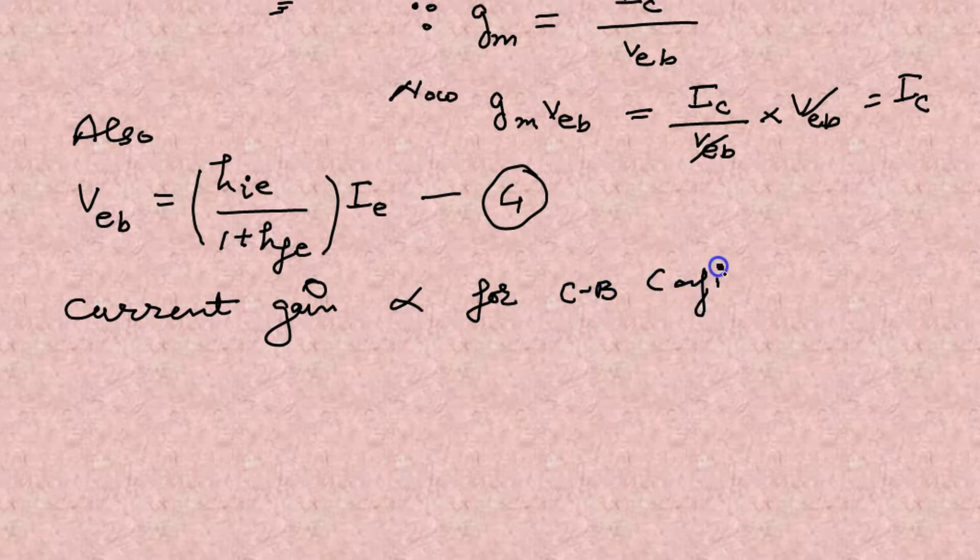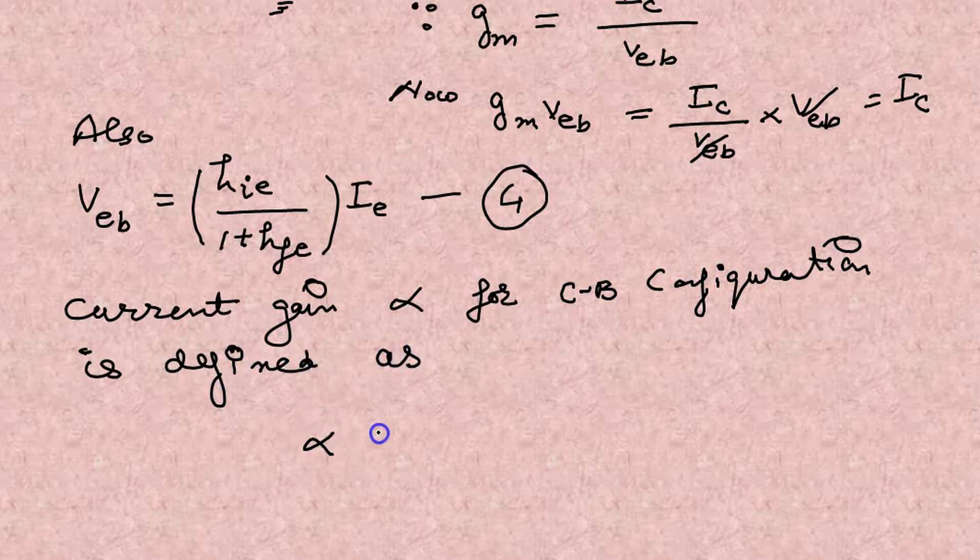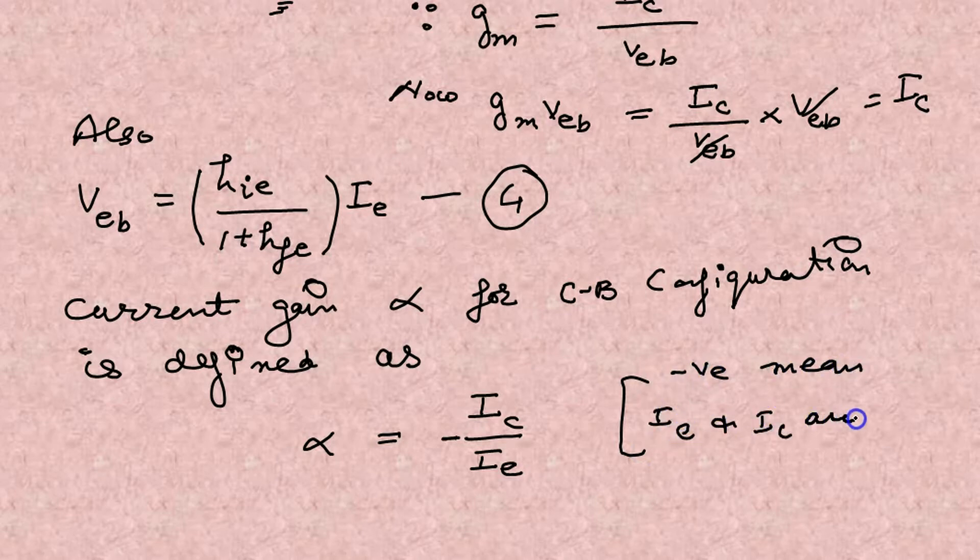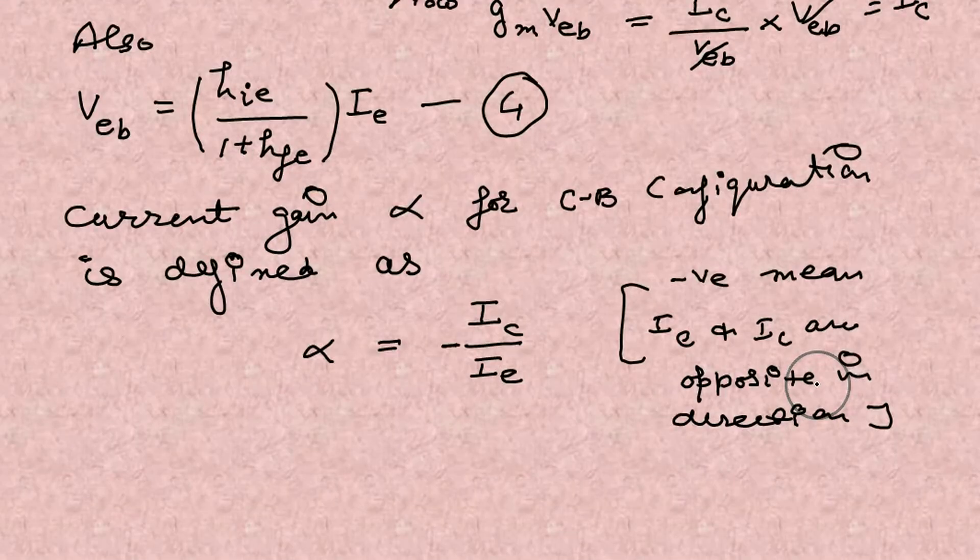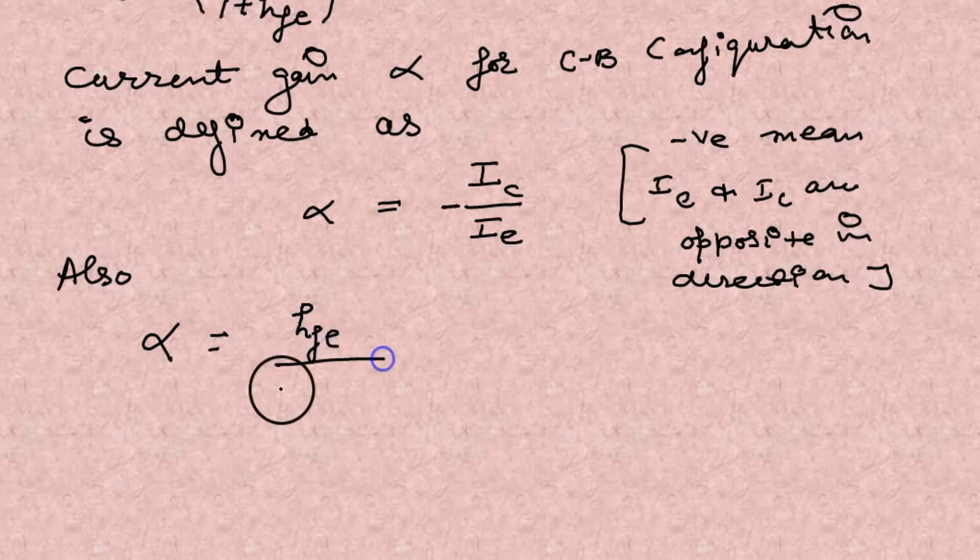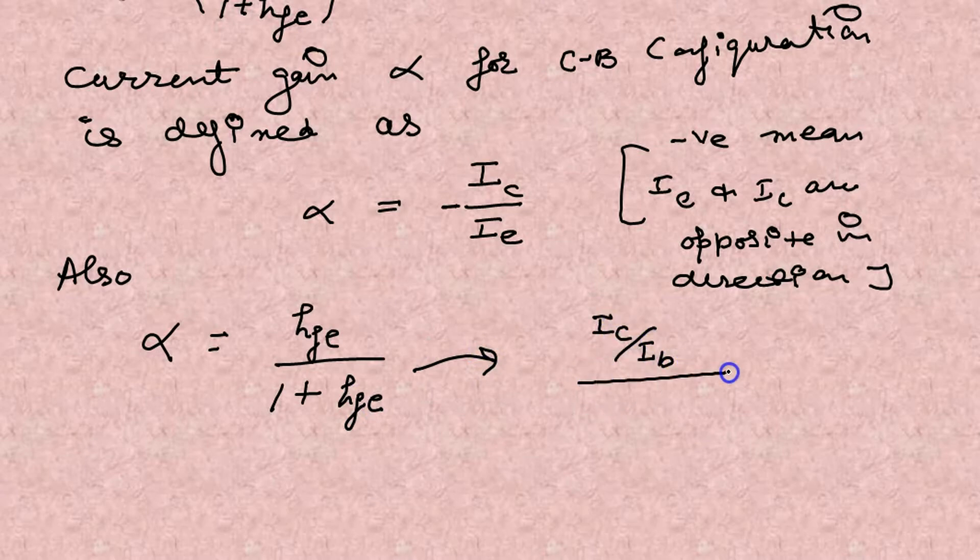The current gain alpha. In common base configuration, we know well, it is defined as output current over input current. Output is collector current, input is the emitter current, with a negative sign because the directions are opposite. So alpha is already proved above. Not proved above, we can prove it now.